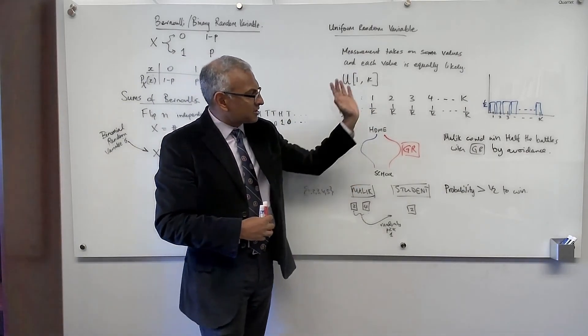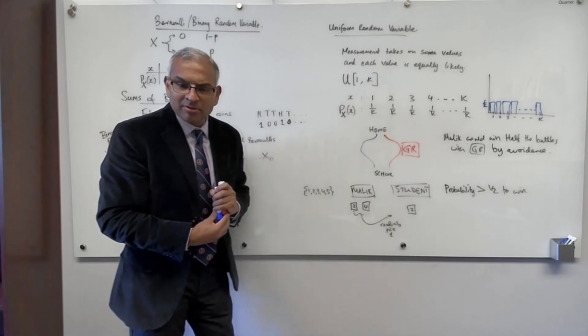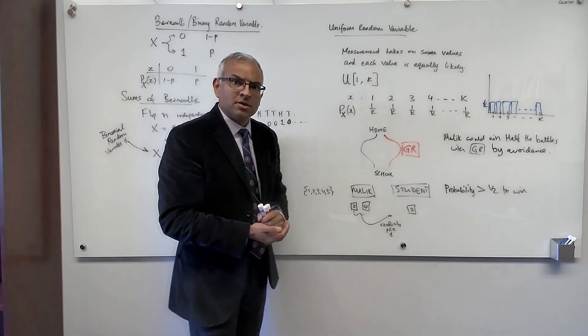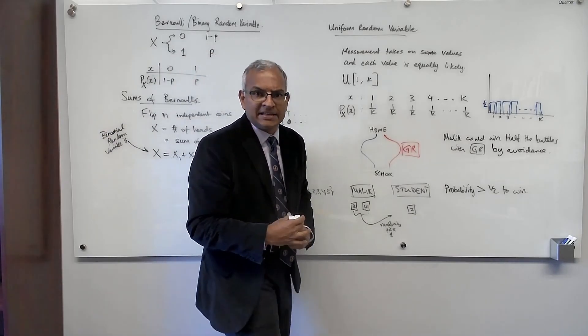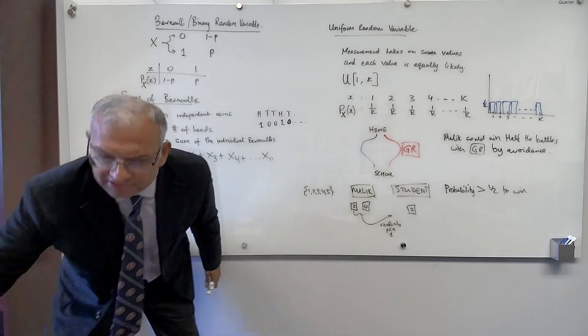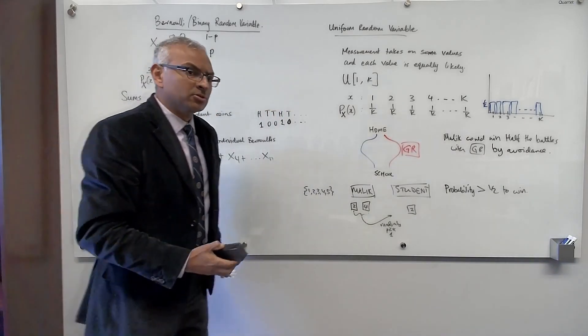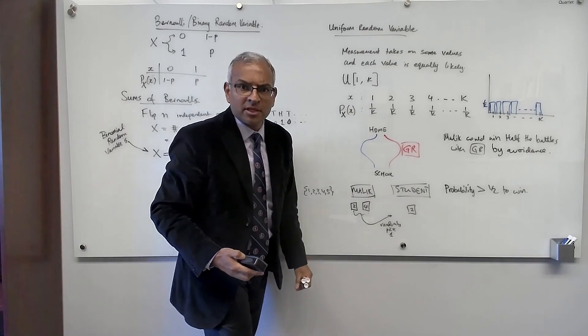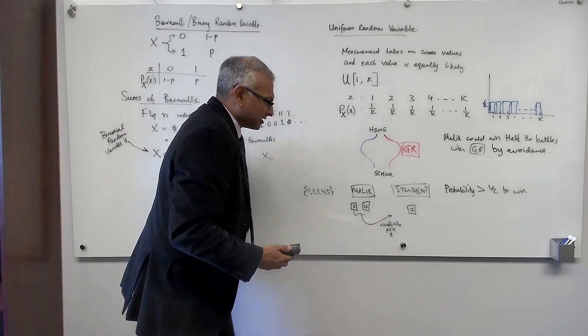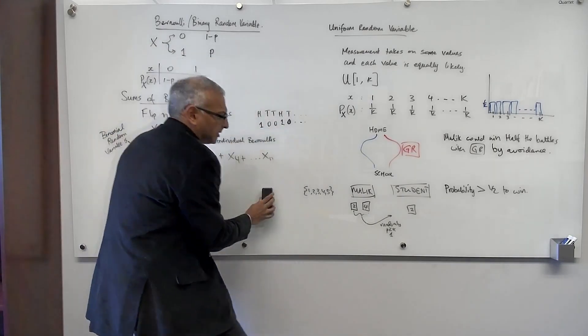So that's the uniform random variable. Now let's get on to the big ticket items — we're going to discuss the binomial random variable and the exponential random variable.